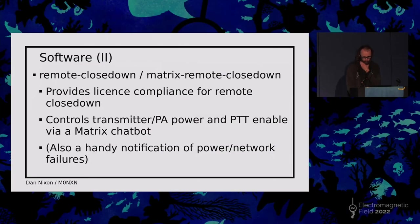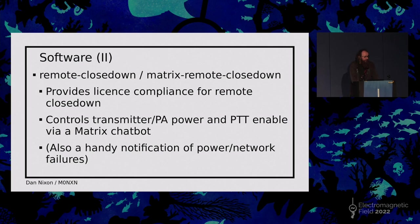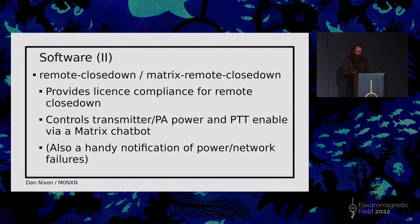More software: a Matrix remote shutdown tool — a couple of things I wrote purely for licensing compliance. They allow me to enable and disable power to the radio remotely. It also serves as quite a handy notification if there are any power or networking issues at the actual transmitter site, which has been useful — it's notified me a couple of times of something weird happening with the power distribution. It presents itself as a Matrix chatbot, so I get notifications right to the phone.